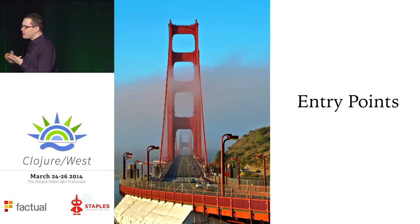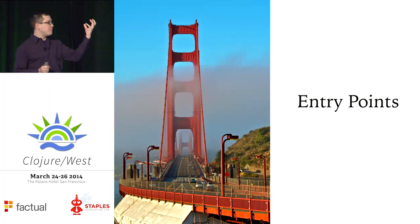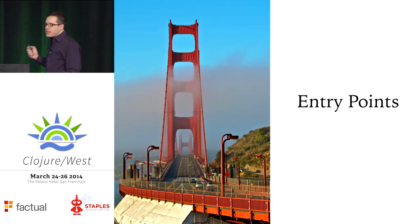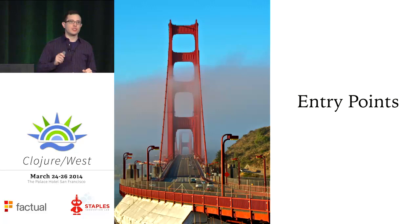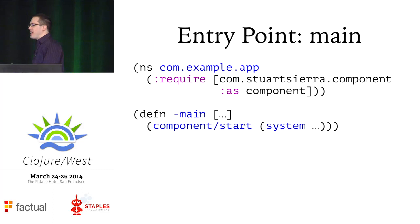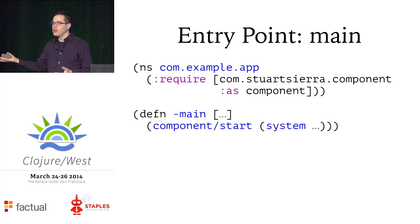Now I've got my components, put them together in a system, and connected them all together so they all know how to talk to each other. What do I do with them? I don't want to take that big system map and pass it as an argument to every function in the program — that puts me right back where I started with the one big map, with all the same problems. Instead, I find key entry points in my application and insert specific components at those entry points. An entry point is any place that your code starts running. The most obvious example is the main function — just create a system and start it.